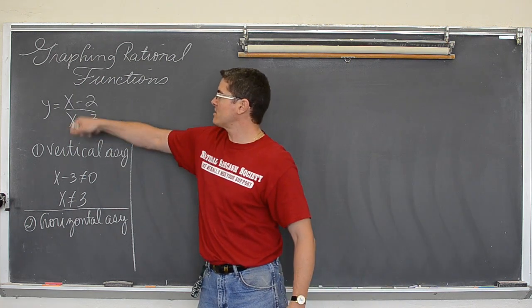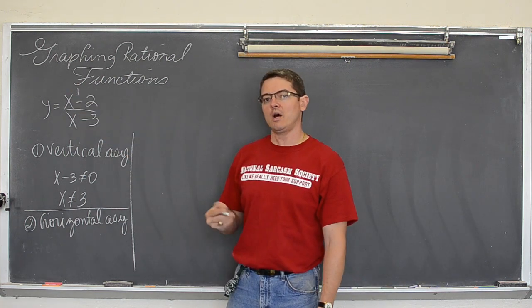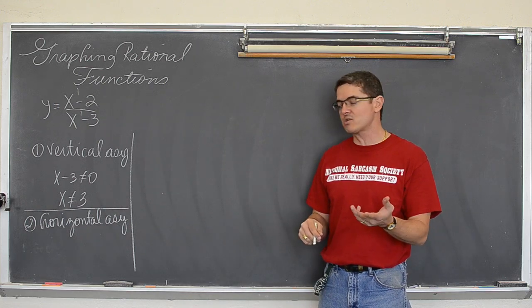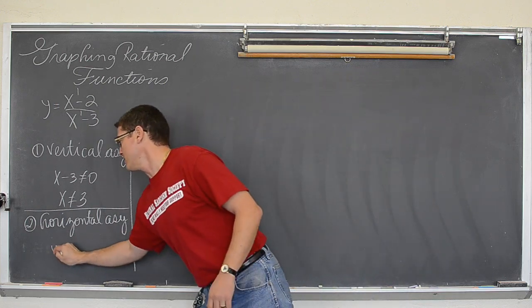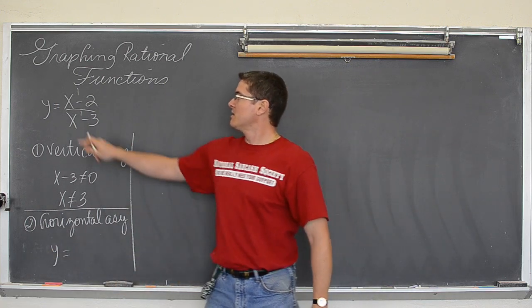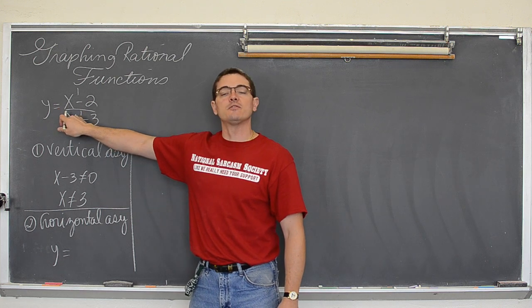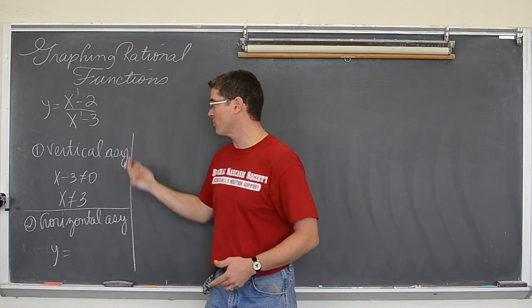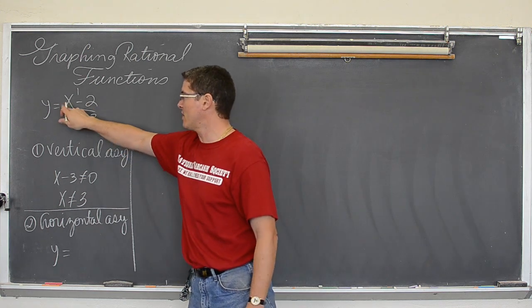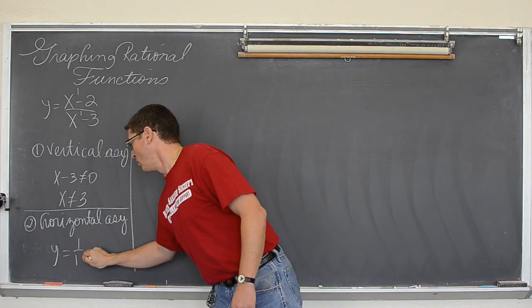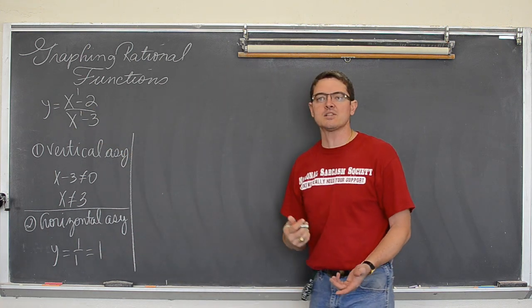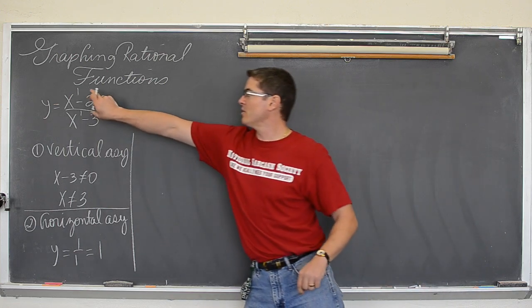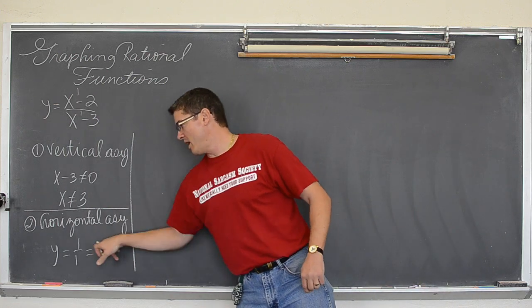Well our numerator has a degree of one. Our denominator has a degree of one. Since those degrees match the horizontal asymptote is going to be y equals the leading coefficient of the top divided by the leading coefficient of the denominator, the bottom term, or polynomial. So that is going to be one over one, or one. So our horizontal asymptote, because the degree of the numerator equals the degree of the denominator, they are both one, is going to be y equals one.